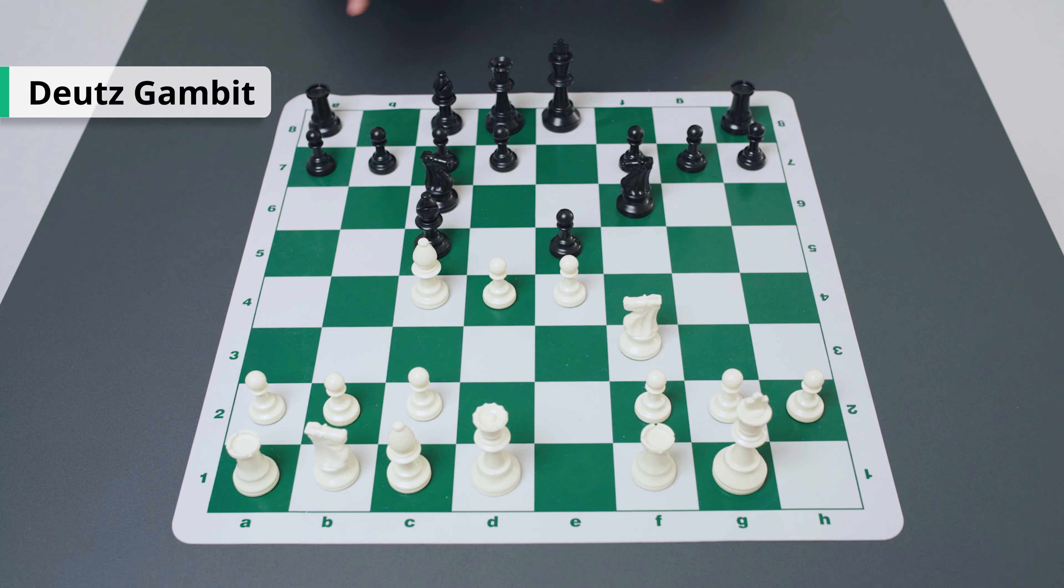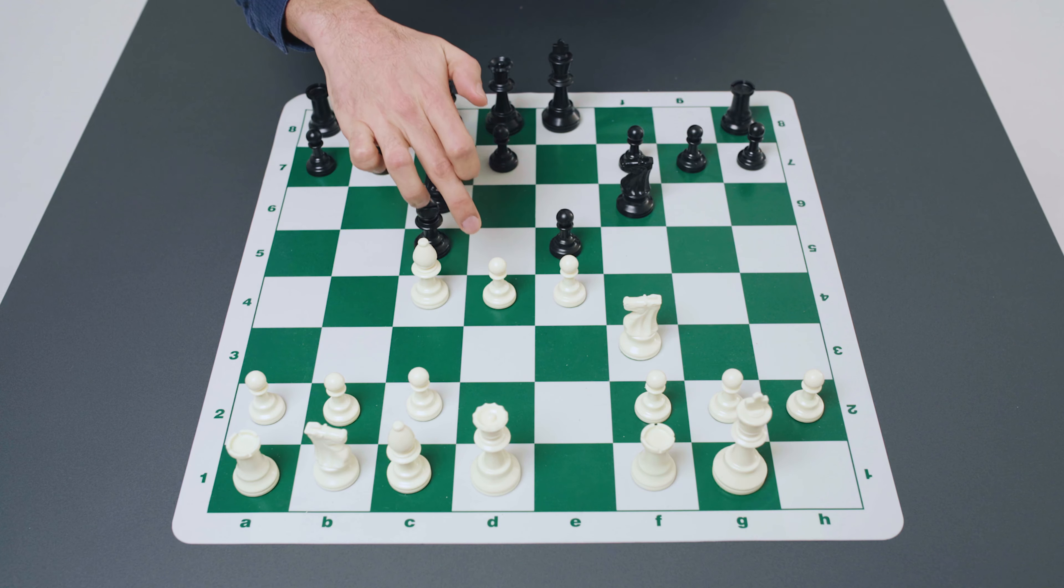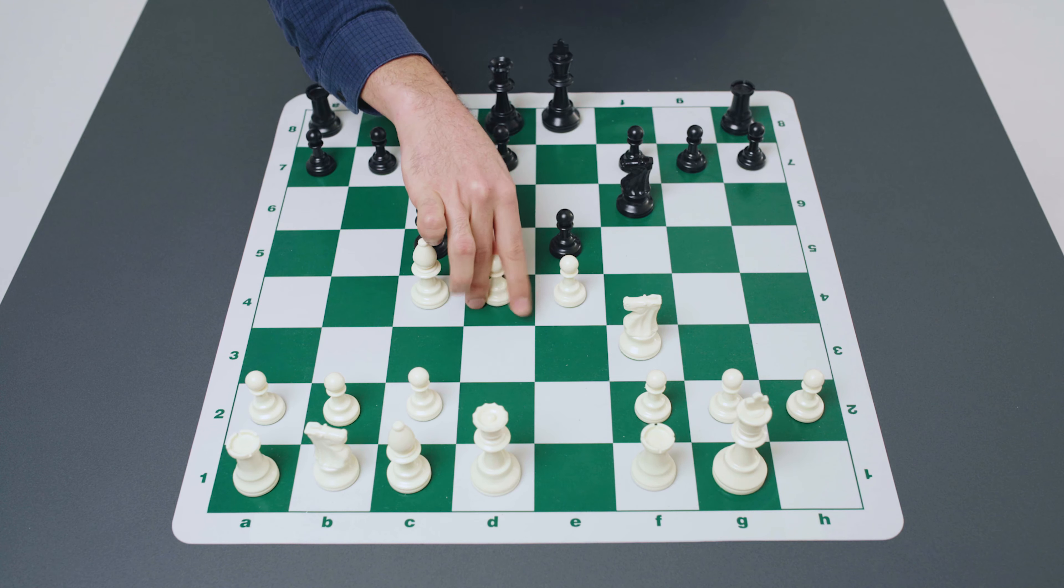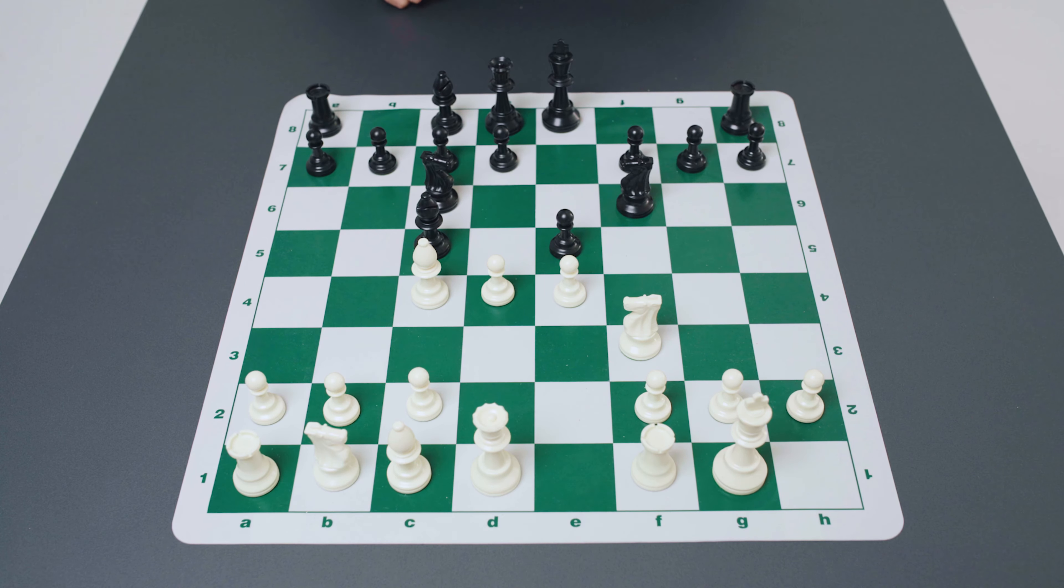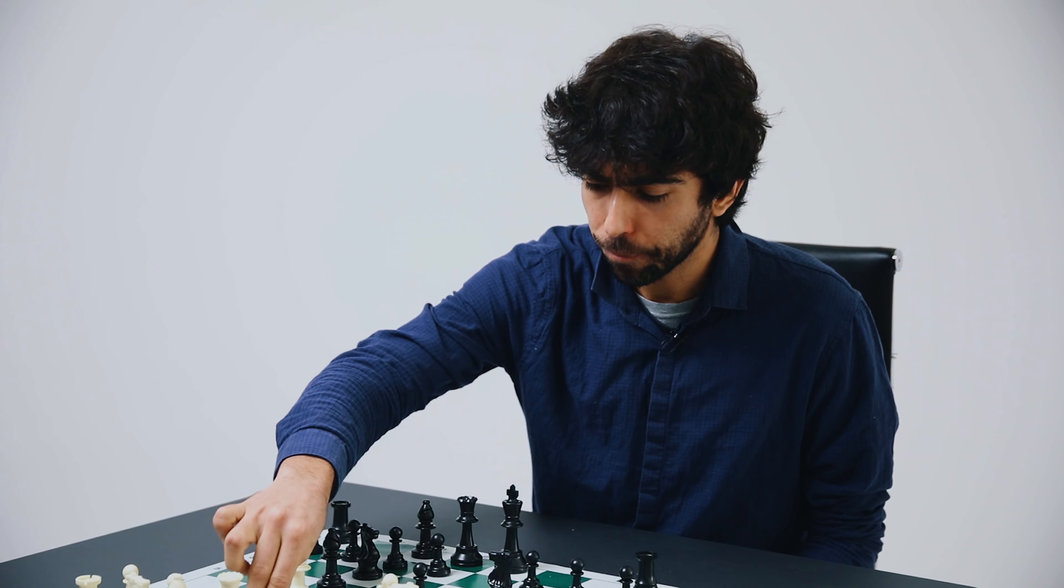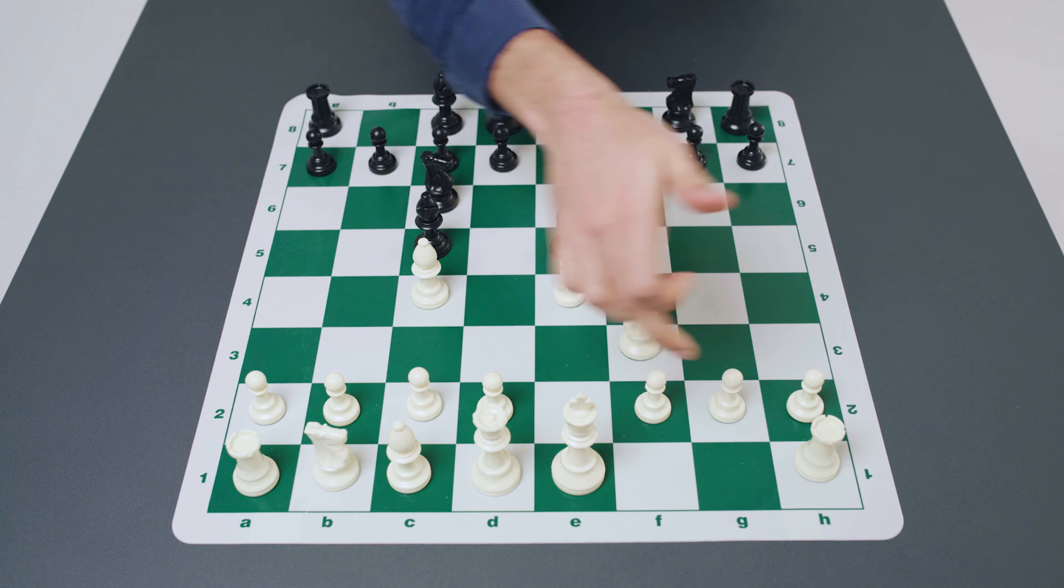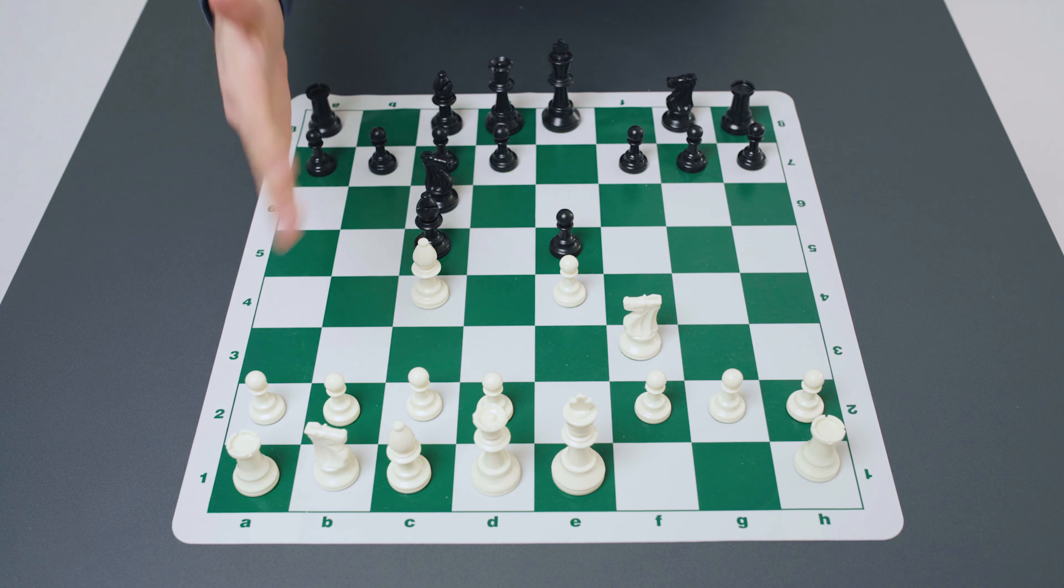We also notice that after the move c3 this diagonal opens up and so white can bring his queen quickly into play. This is the move b4. The name of such a move is the Evans Gambit. It's named after the Welsh sea captain William Davies Evans who first employed it in the 19th century.